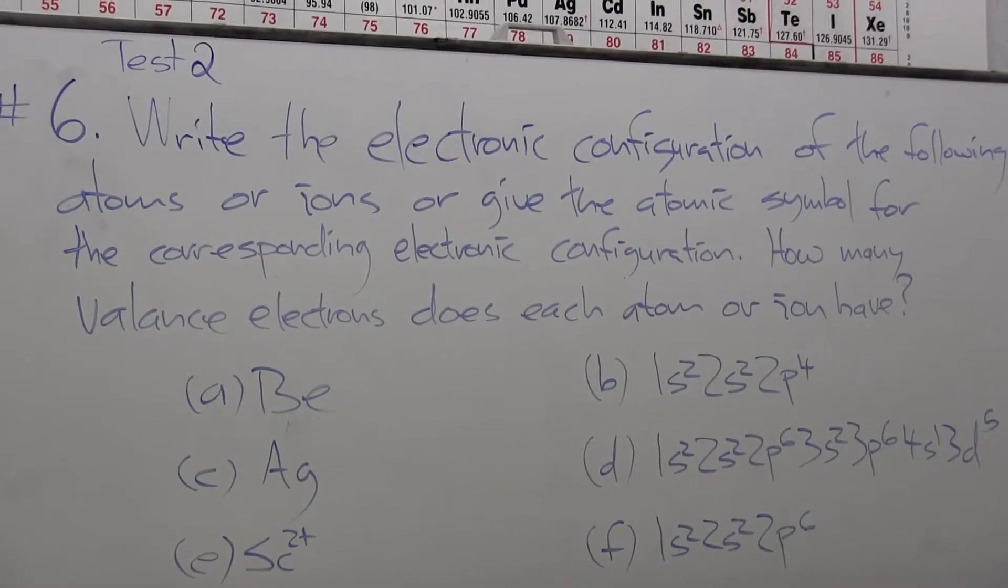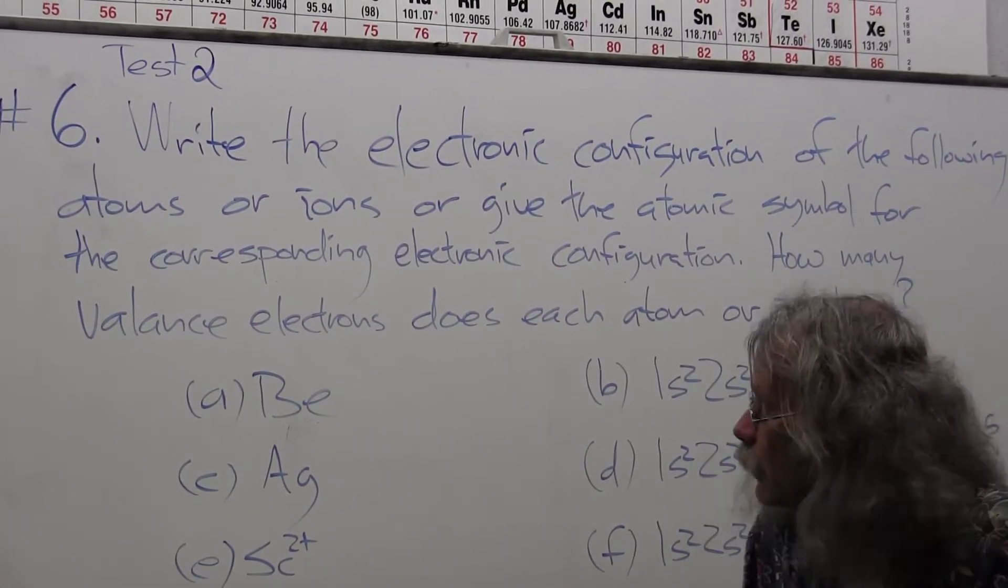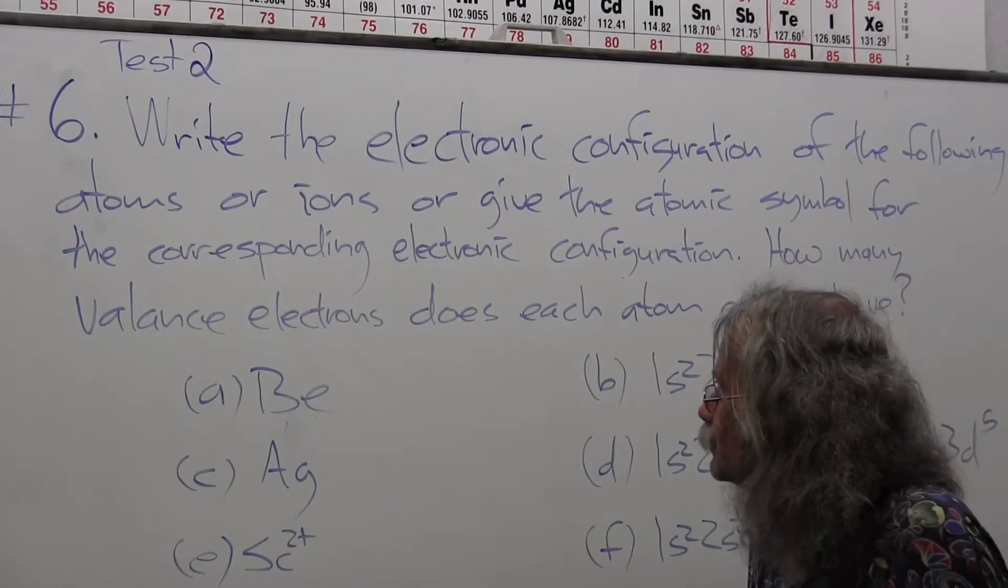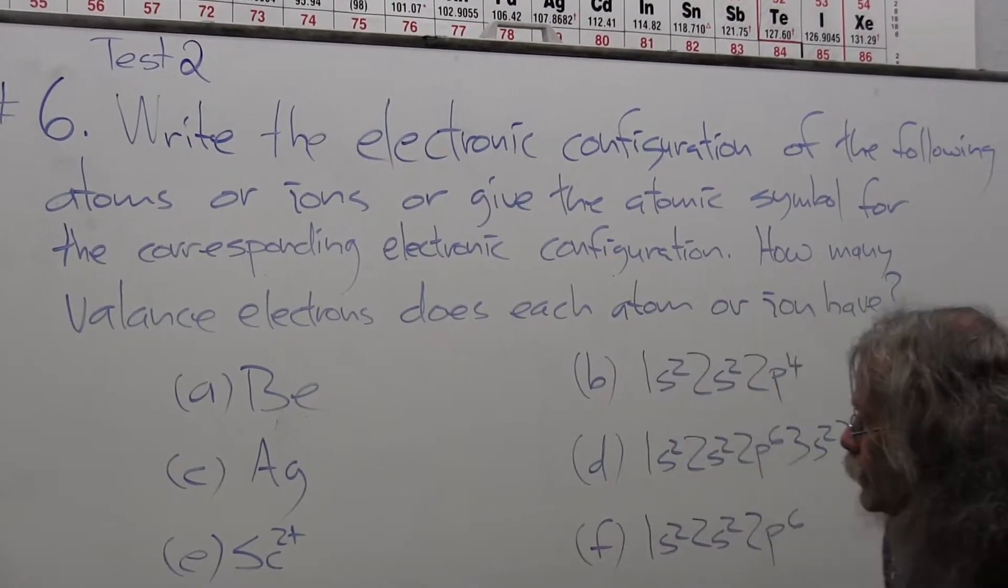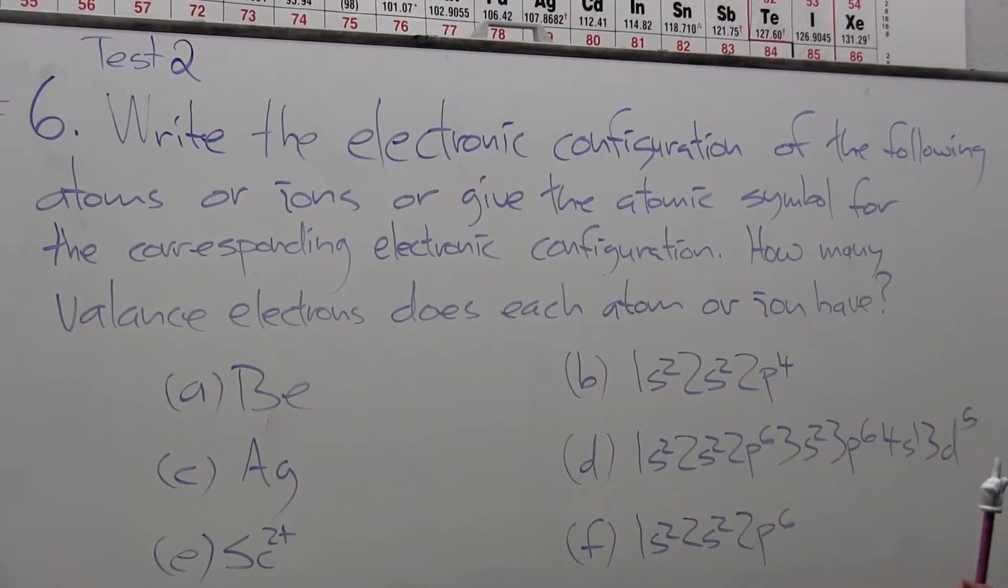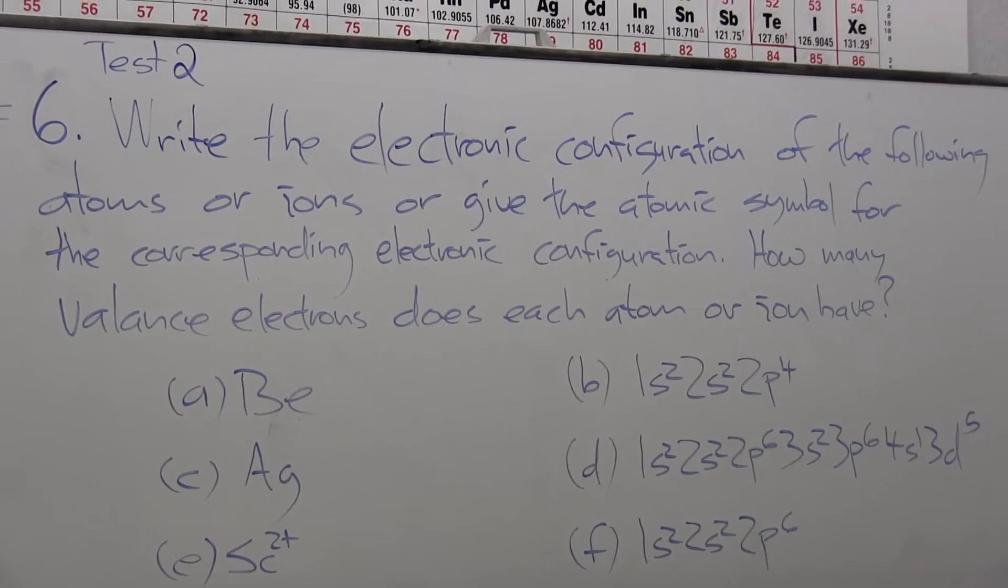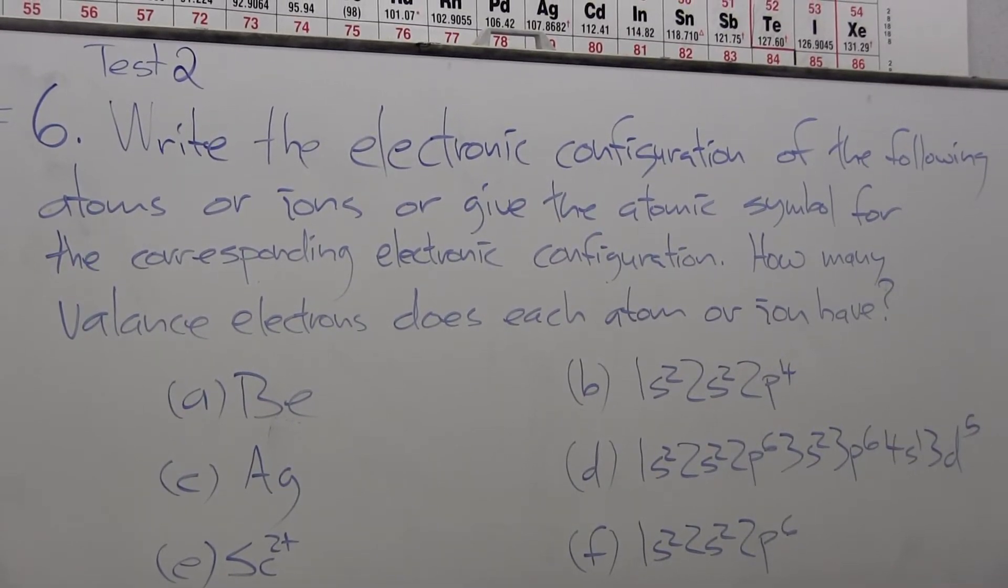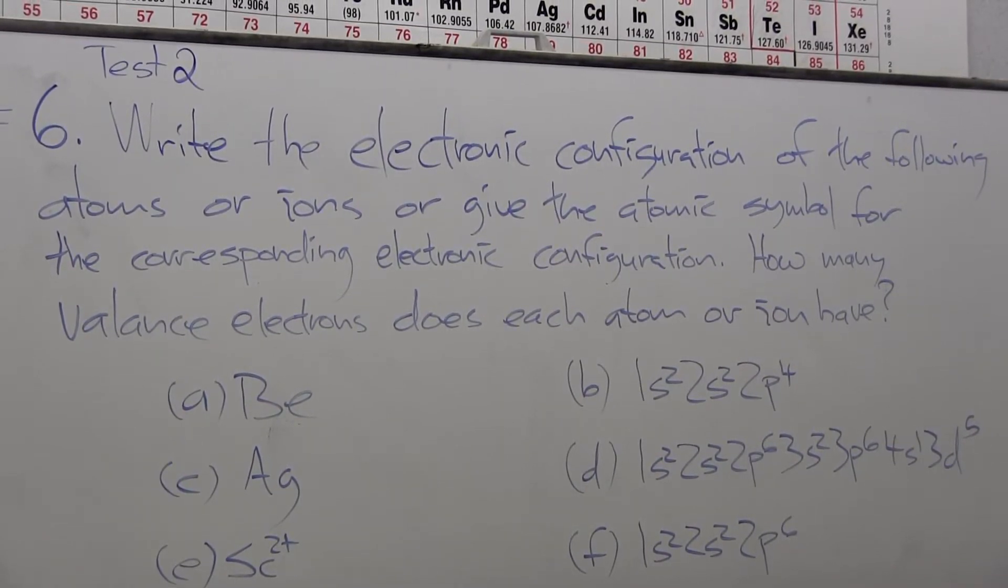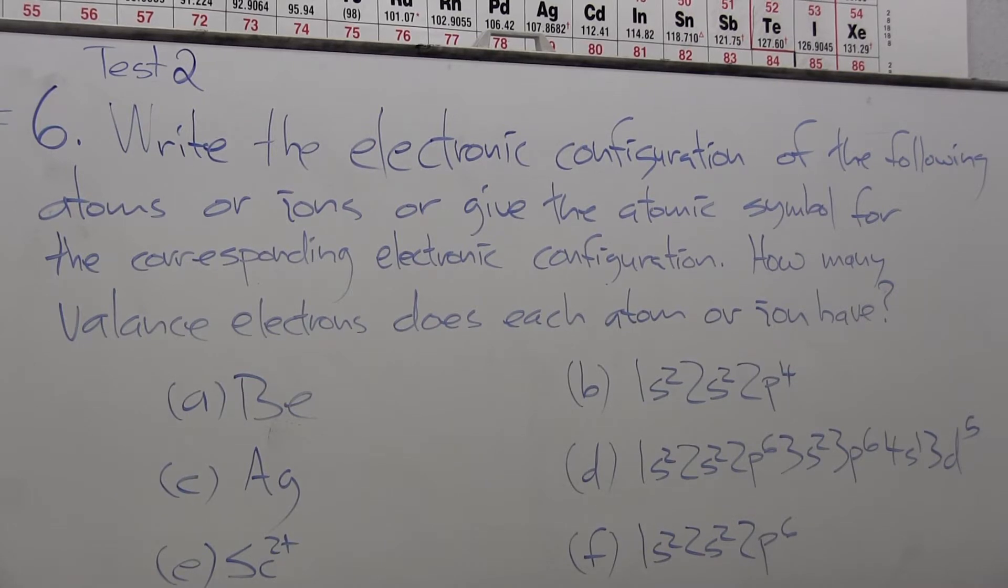This is practice test number two, problem number six. The question is: write the electronic configuration of the following atoms or ions, or give the atomic symbol for the corresponding electronic configuration.